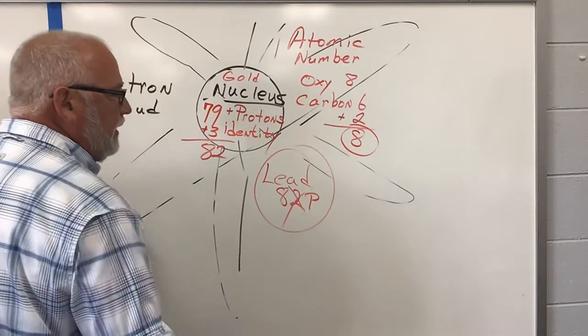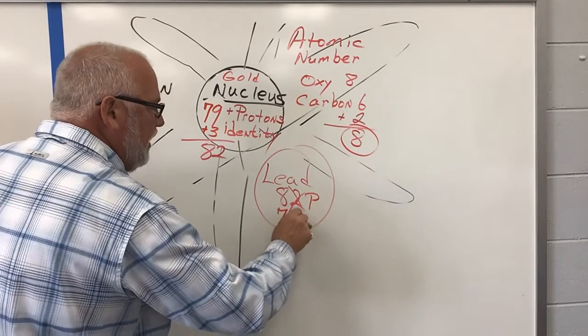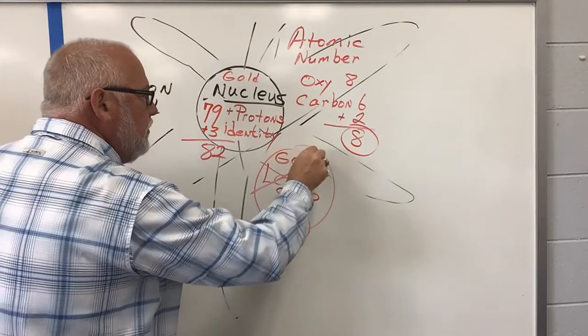Boom, boom. Knock out two, down to 80. Knock out three, and we're down to 79. And we have just changed lead into gold.